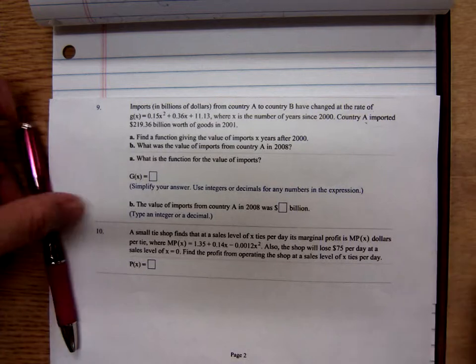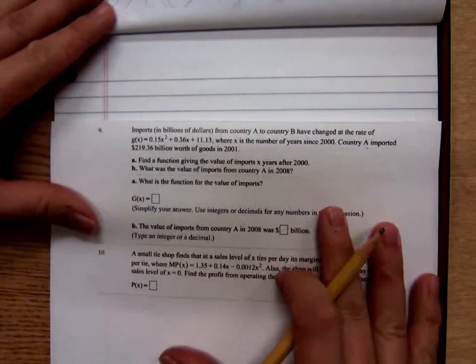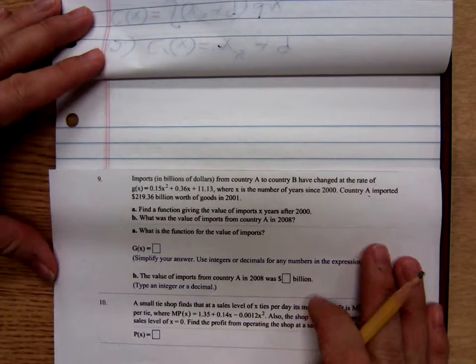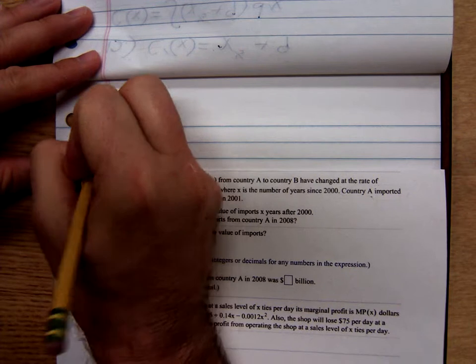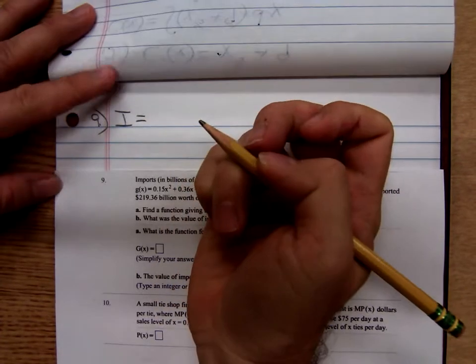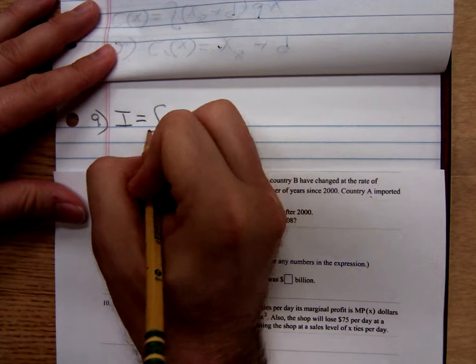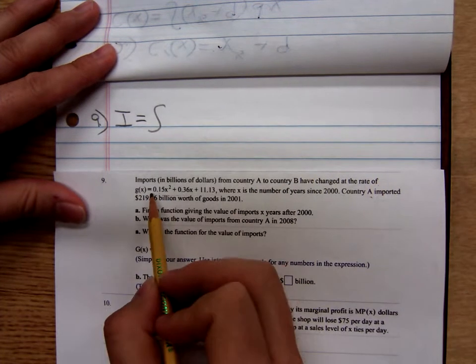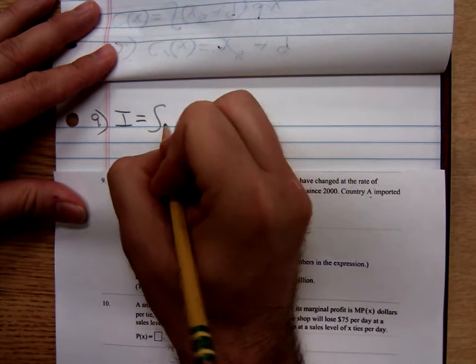But for the time being, we want to find the import function. So this is number nine. We want our import function, I'm going to call it capital I. To go backwards, we're going to have to anti-differentiate the rate of change function.